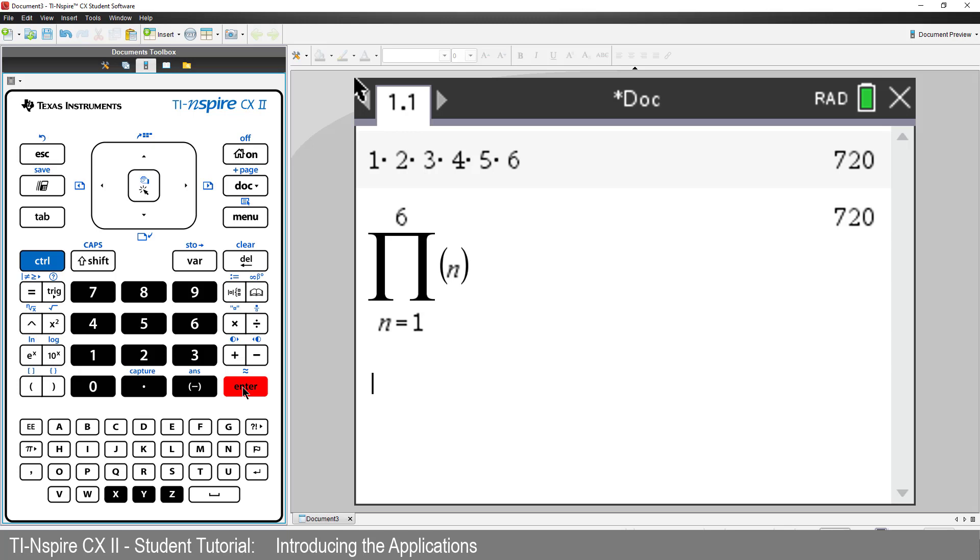This type of calculation is so common it actually has its own symbol. The exclamation mark. Or factorial. Press the punctuation key. Then again to automatically move across. And press Enter. And then Enter again to calculate the answer.